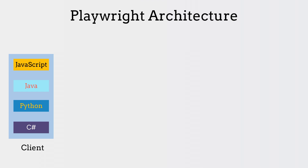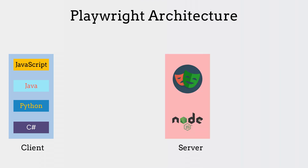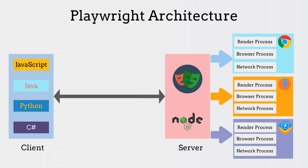The Playwright server communicates with the client and different web browser engines. Playwright uses the Chrome Dev Tools Protocol, CDP, to communicate with Chromium. For Firefox and WebKit, Playwright implemented their own protocols similar to CDP.